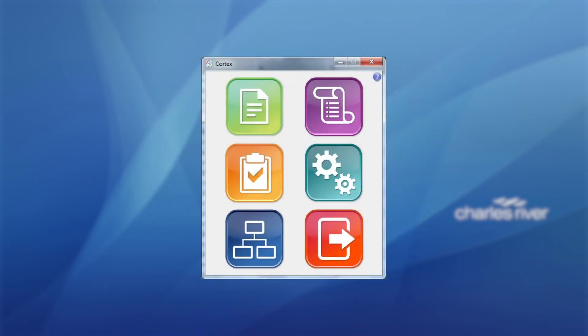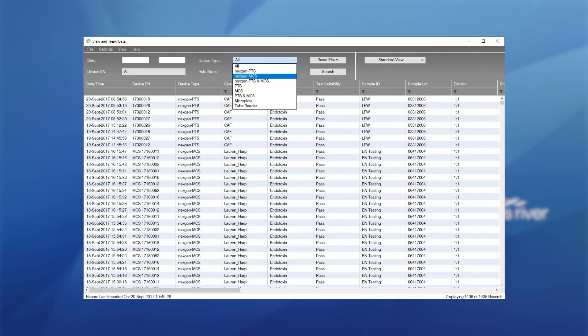Cortex should be set up to automatically import data from EndoScan-V. From within Cortex, click on the icon for view and trend data. From within this screen, utilize the gray filter area at the top of the screen to choose all NextGen MCS results from under device type.